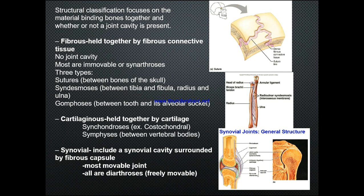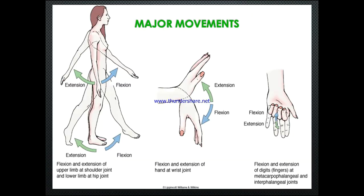Fibrous joints are held together by fibrous connective tissue with no joint cavity — most are immovable synarthroses. There are three types: sutures between the bones of the skull; syndesmosis between the tibia and fibula and the radius and ulna; and gomphosis between a tooth and its alveolar socket. Cartilaginous joints are held together by cartilage — examples include synchondrosis such as costochondral joints, and symphysis between the vertebral bodies. Synovial joints include a synovial cavity surrounded by a fibrous capsule — these are the most moveable joints and all are diarthroses, freely moveable.